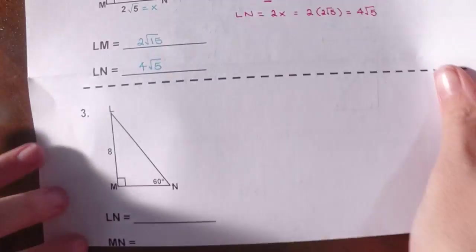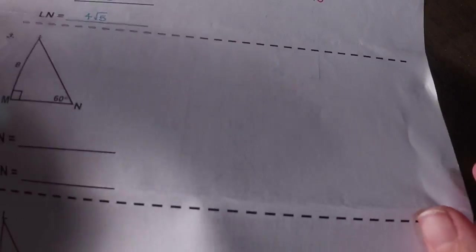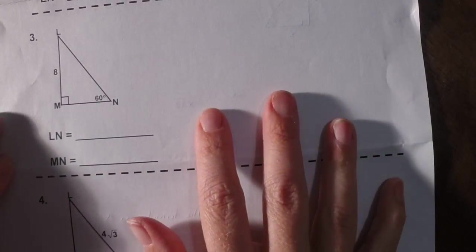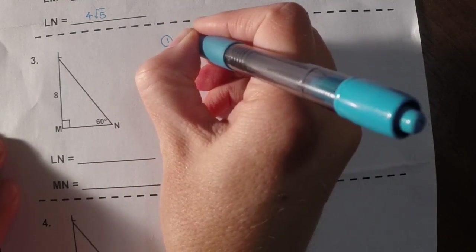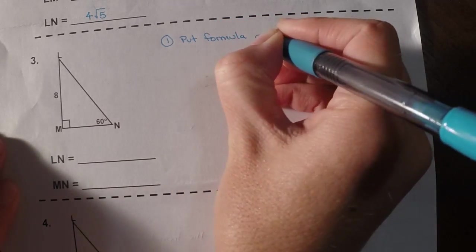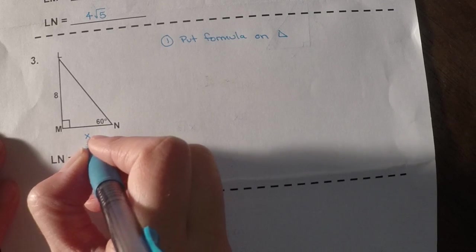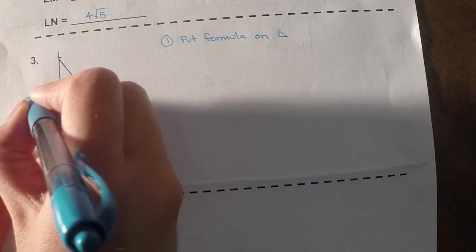On this next one, you are going to have to rationalize the denominator. I know, it's your favorite part. So for number 3, let's follow our steps. So step 1, we're going to put the formula on the triangle. So the short leg is x, the hypotenuse is 2x, and the long leg is x root 3.